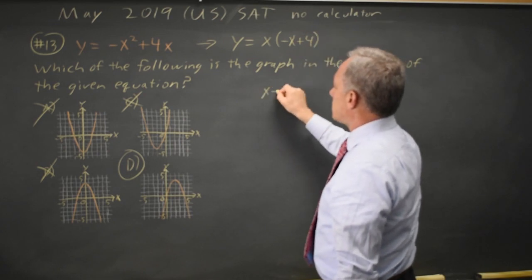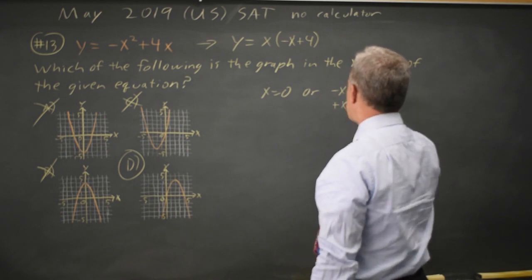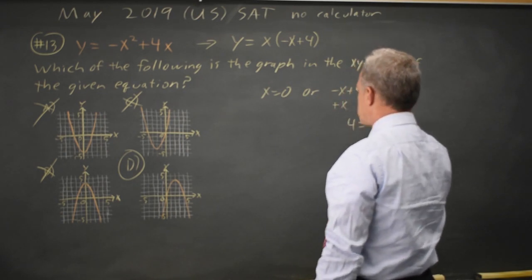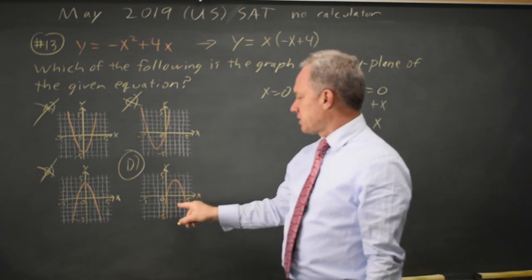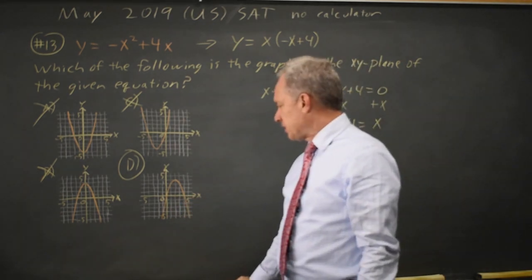So either x equals zero or negative x plus four equals zero. Add x to both sides and four equals x. And choice D has a zero at x equals positive four, which confirms my previous selection.